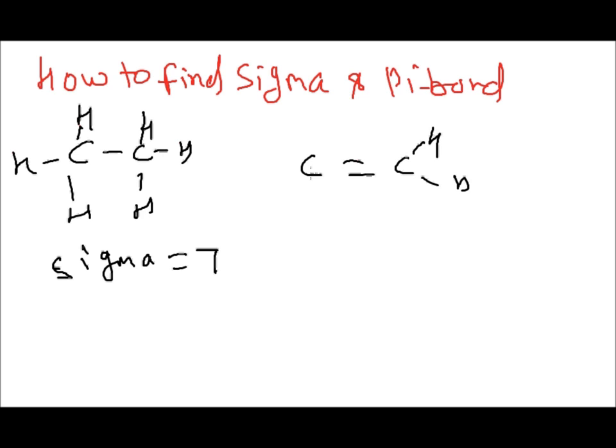Now if compound like C double bond C, H, H, H and H. So count only single bonds: 1, 2, 3, 4, and in this double bond there is 1 sigma and 1 pi.